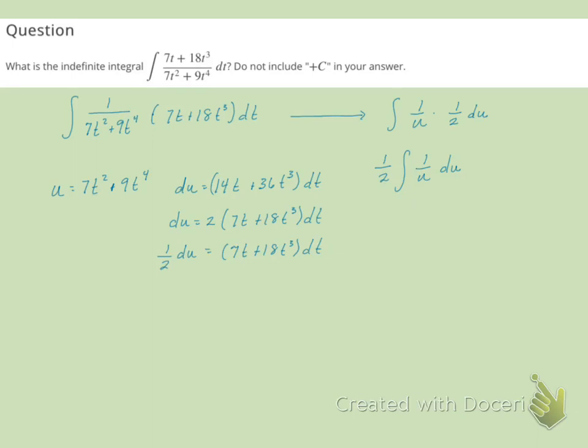And we know that the integral of 1 over u is ln of u. In fact, we need an absolute value there. So we'll have 1 half the natural log of the absolute value of u plus c.